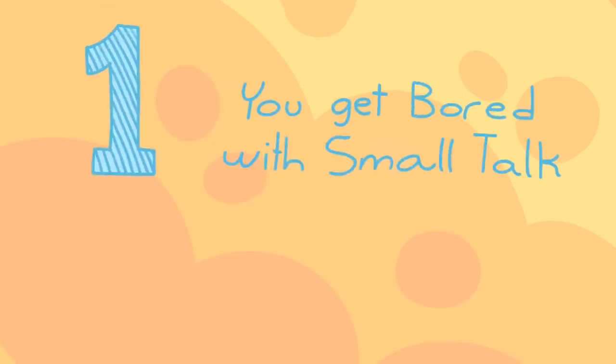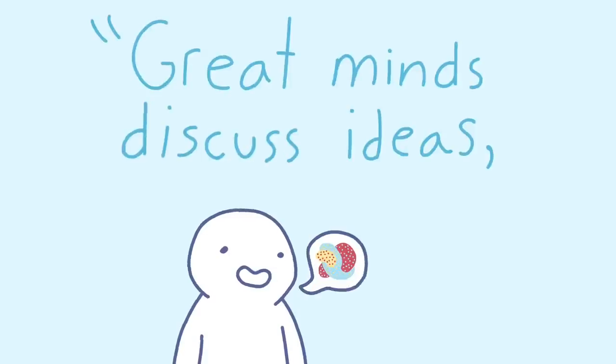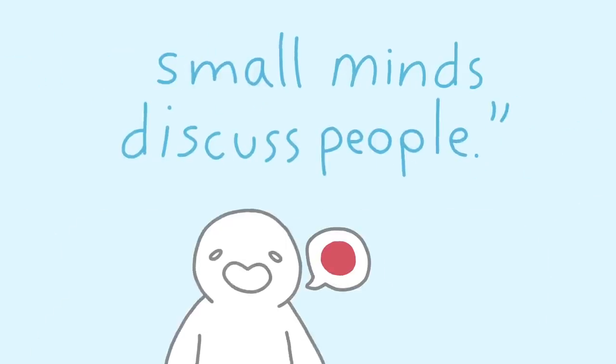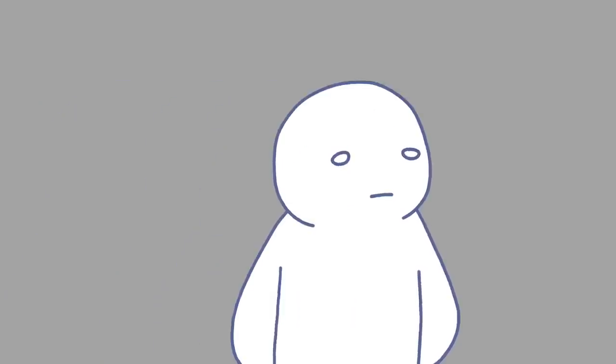1. You get bored with small talk. If you've ever heard the quote, Great minds discuss ideas. Average minds discuss events. Small minds discuss people. This is what it means. Highly intelligent people aren't drawn to what they consider the unimportant details of life.